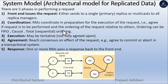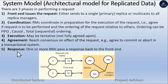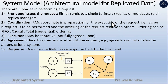Third, execution may be tentative or not fully agreed upon. Fourth, agreement: agree to commit or abort in a transactional system. Fifth, response: one or more replica managers pass a response back to the front end. This is the architectural model. In the next video we will discuss replication techniques for fault-tolerant services.